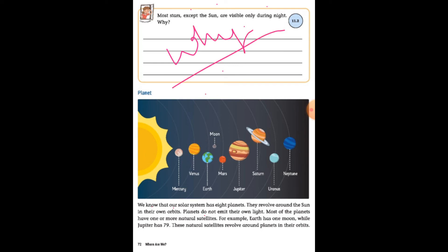Planets. We know that our solar system has eight planets: Mercury, Venus, Earth, Mars, Jupiter, Saturn, Uranus and Neptune. They revolve around the sun in their own orbits. Planets don't emit their own light.